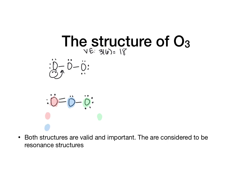We can now calculate the formal charges. For the red oxygen: six minus half of four minus two equals zero. For the blue (central) oxygen: six minus half of six minus two equals plus one — a positive charge. For the green oxygen: six minus half of two minus six equals negative one.